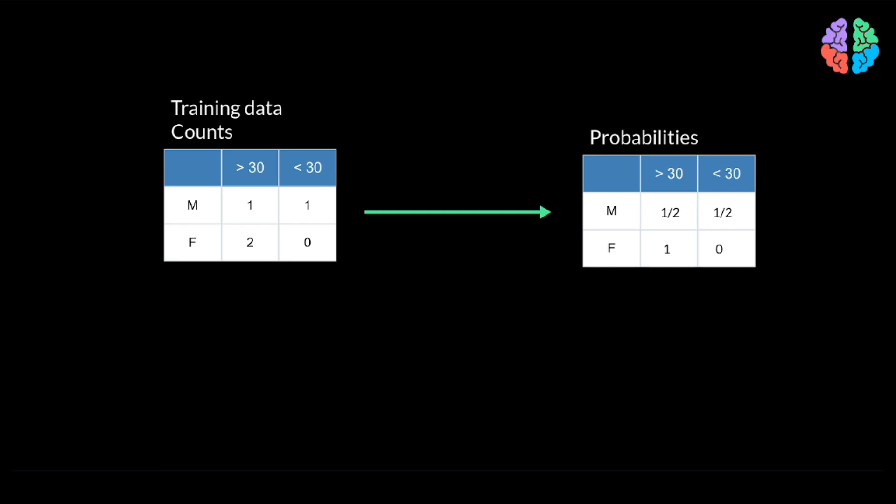If I tell you the person is a male, there are only two males in the training dataset. So, the chance of getting the output to be less than 30 is 1 in 2, or 1 by 2. Similarly, the chance of getting the output as greater than 30 is 1 by 2, simply because I have already told you the person is a male.